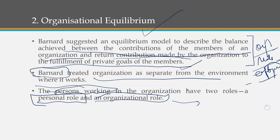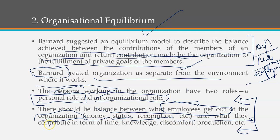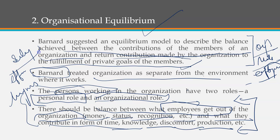To summarize equilibrium: it is a balance between what an employee gets out of the organization — salary, status, recognition — and what they contribute in terms of time, knowledge, discomfort, and production. Every job requires some discomfort or pain, and in return, the organization must recognize those efforts and pay properly in terms of salary. When both sides are balanced, a good organizational equilibrium is created.